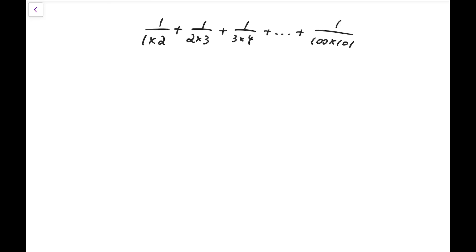By writing each term into different sub-fractions, say the first one is equal to 1 over 1 minus 1 over 2, and then the second term is equal to 1 half minus 1 third, and so on.